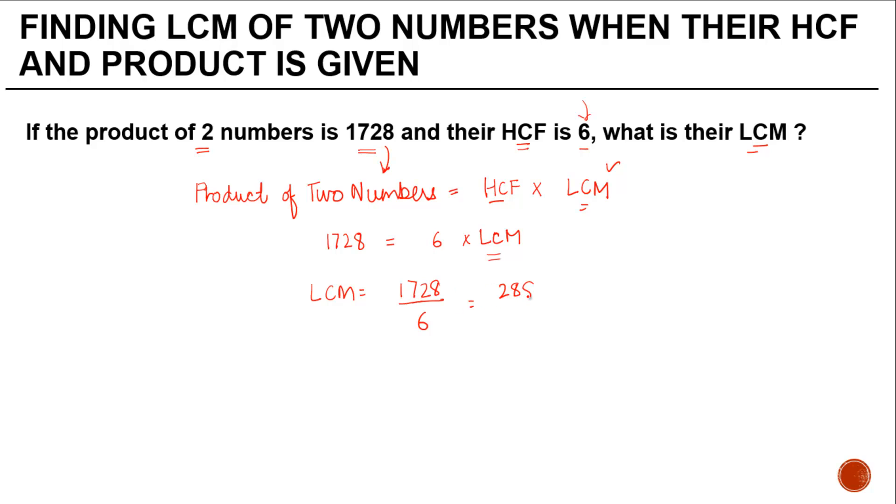In other words, the least common multiple of the two numbers whose product is 1728 and HCF is 6 equals 288.